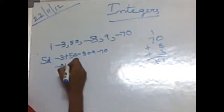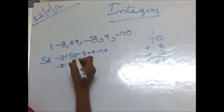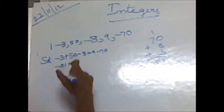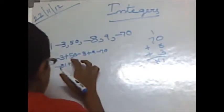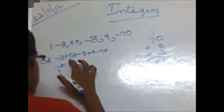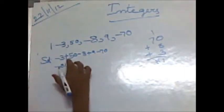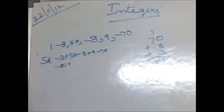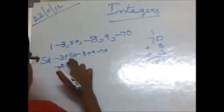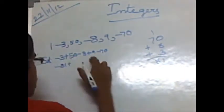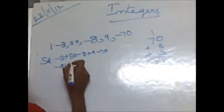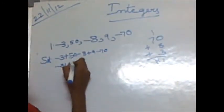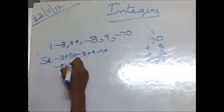And then plus. Now we are going to add all the plus family digits. In the plus family, there are 15 and 9. So 15 plus 9 is equal to plus 24.